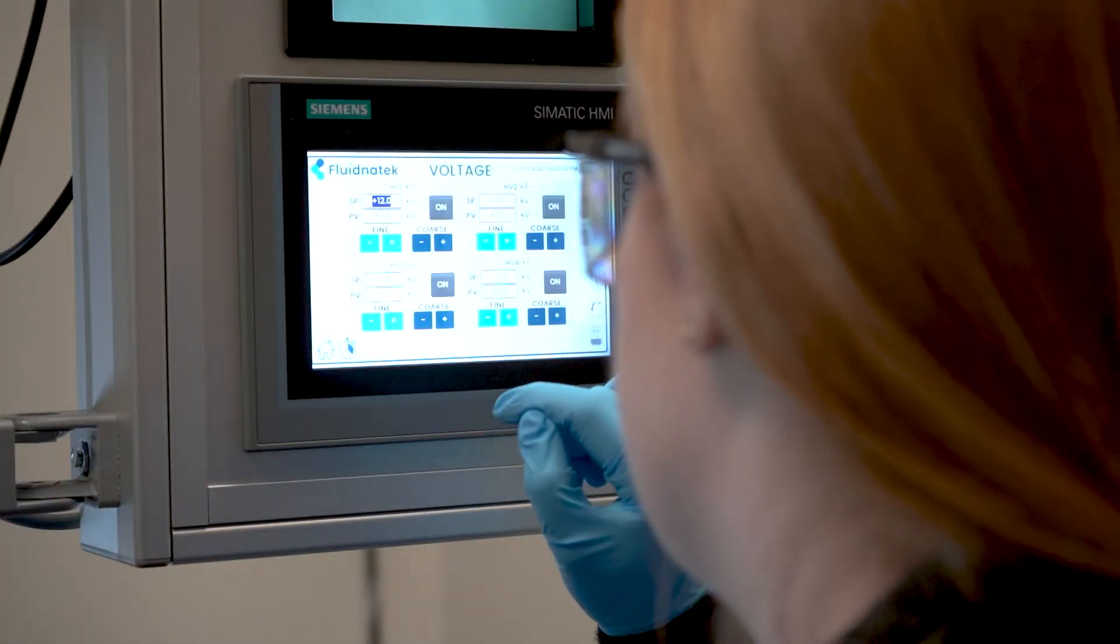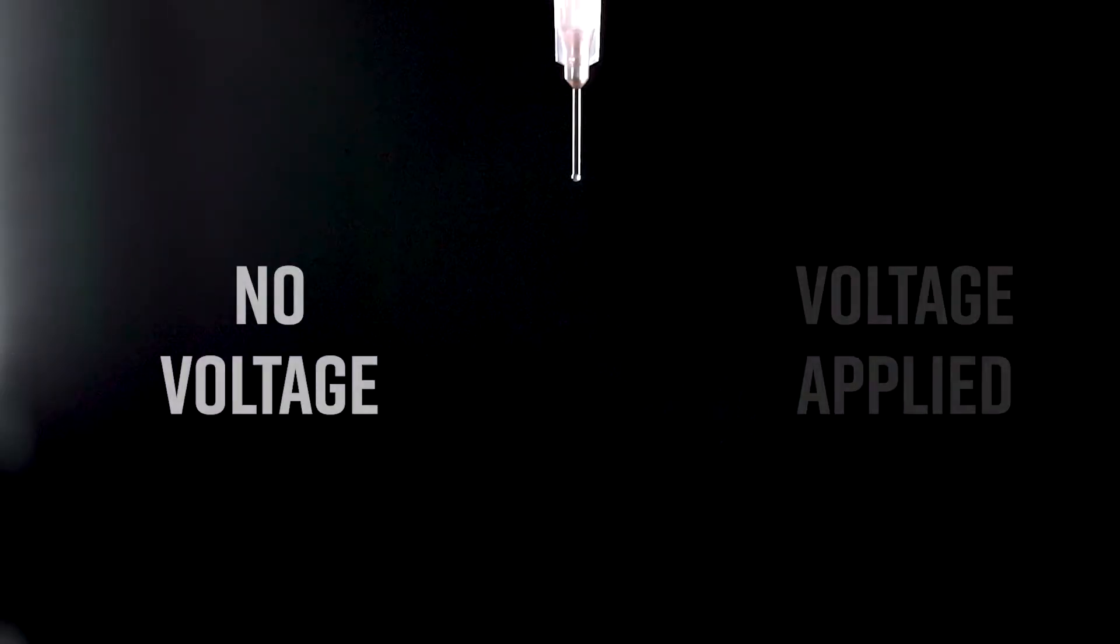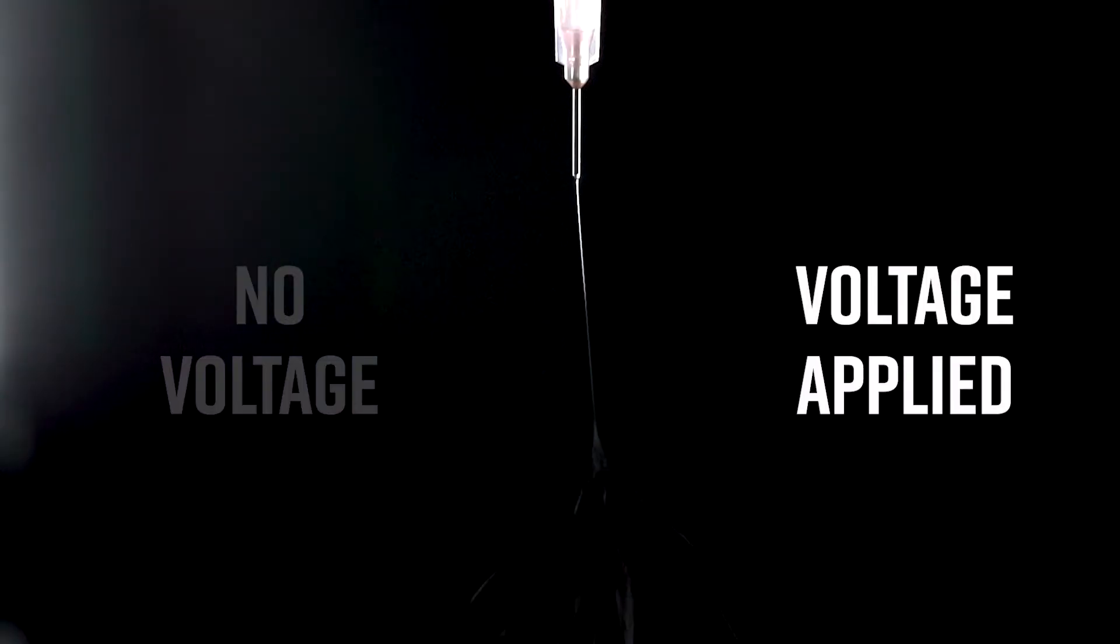Now we introduce an electric field. When you apply a high voltage between the syringe emitter and a collector, usually a metal plate or drum, something incredible happens. The polymer solution stretches into an ultrafine jet.